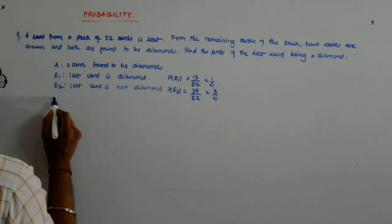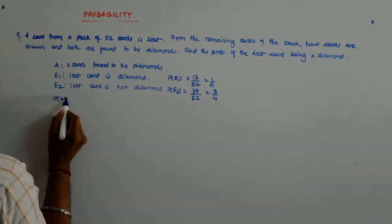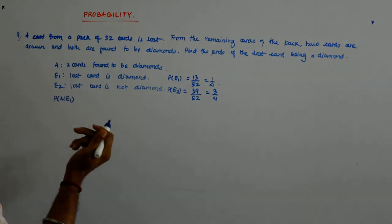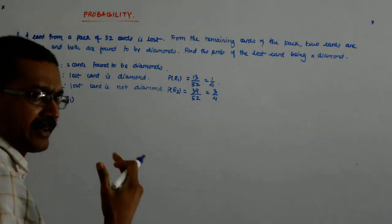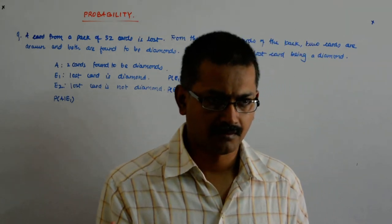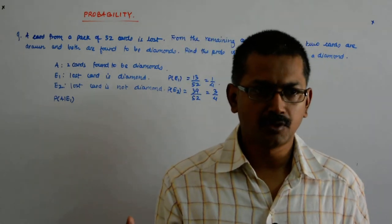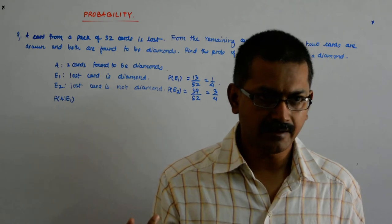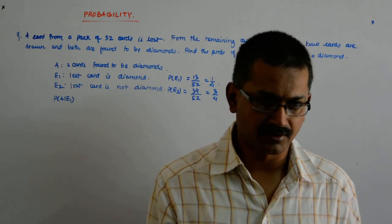Okay, so now what is the probability of A given E1? What is the probability of pulling out two diamonds provided that a diamond is lost? In what ways can you pull two diamonds out provided the diamond itself is lost?